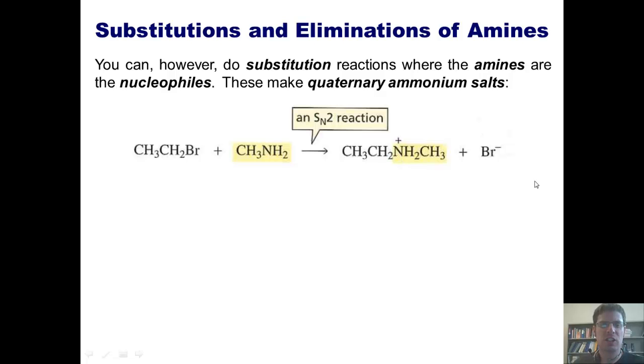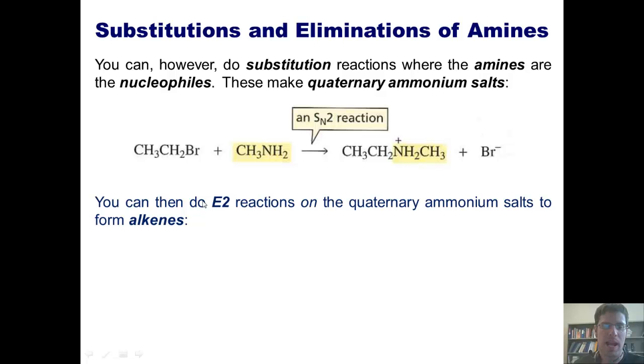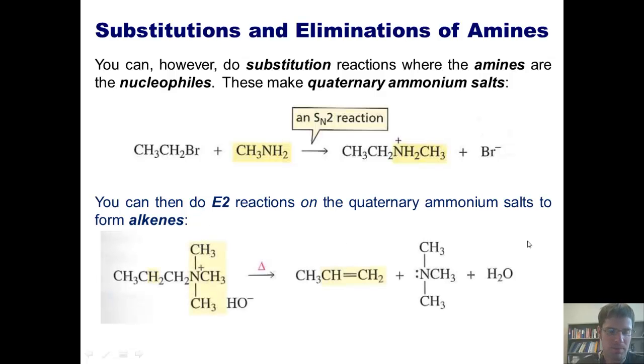Ammonium salts are actually useful because we can do E2 reactions on them to form alkenes. Here's an example. I've got an ammonium salt that has the nitrogen bonded to four different carbon groups. The counterion is a hydroxide. If I heat this up,